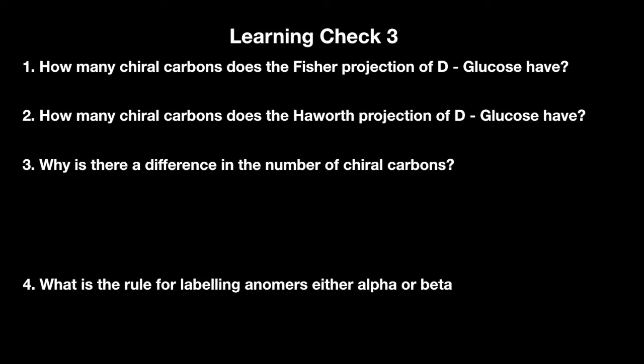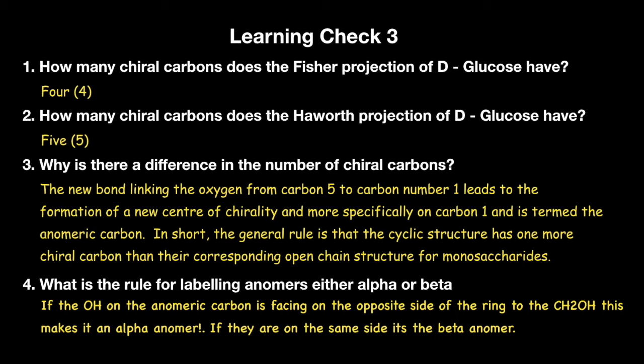Finally here's learning check number three, with four questions in total. And here are the answers. For question one the answer was four. Question two, five. Question three: the new bond linking the oxygen from carbon 5 to carbon number 1 leads to the formation of a new center of chirality, and more specifically on carbon 1, termed the anomeric carbon. In short, the general rule is that the cyclic structure has one more chiral carbon than its corresponding open chain structure for that monosaccharide. Finally, question four: if the OH on the anomeric carbon is facing on the opposite side of the ring to the CH2OH, this makes it an alpha anomer. If they are on the same side, it is the beta anomer.